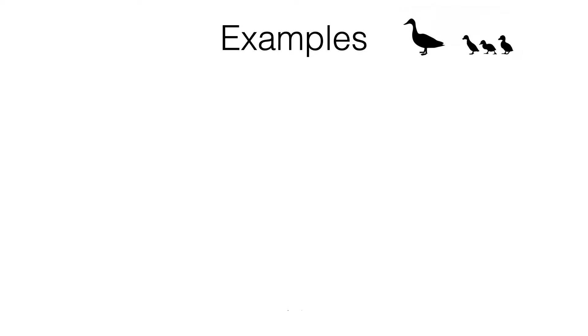In this video we are looking at error intervals. I'm going to give you an overview of what these are all about. For example, let's say I've got a number k and I don't tell you what it is but I tell you that when I round it to the nearest hundred it is 700.